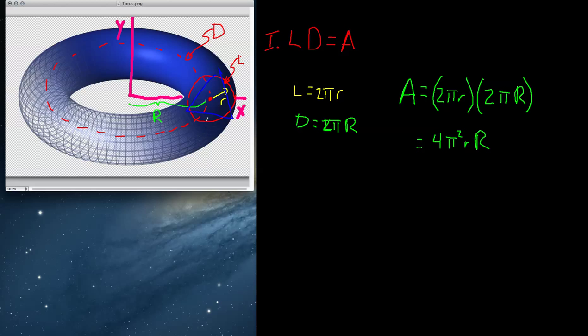Now, this theorem doesn't stop there. What they also look at is what happens if you take, instead of taking the length of this shape rotating it about the torus, we're going to take the area of this shape and rotate it about the axis. We're going to multiply it by the distance the centroid travels, and now we're going to get the volume of the shape.